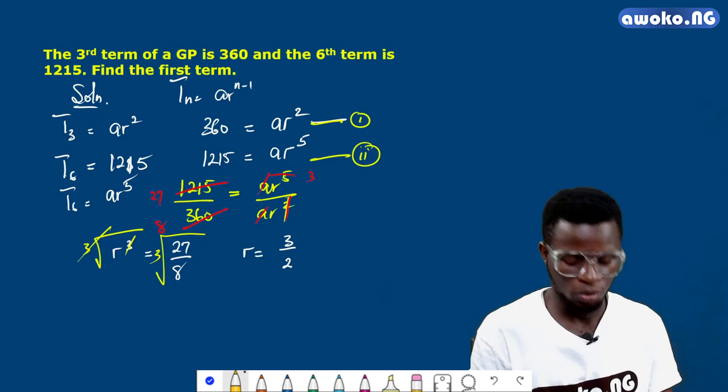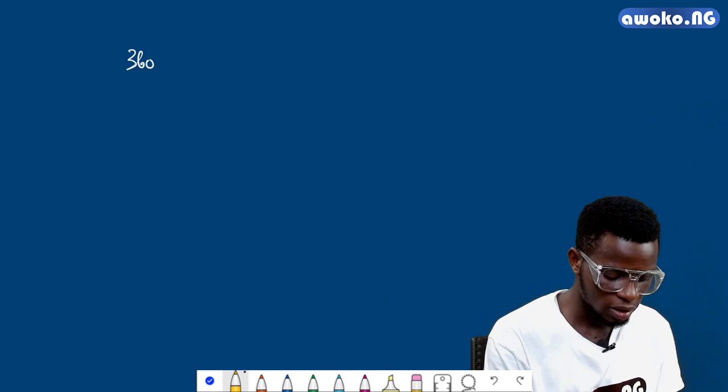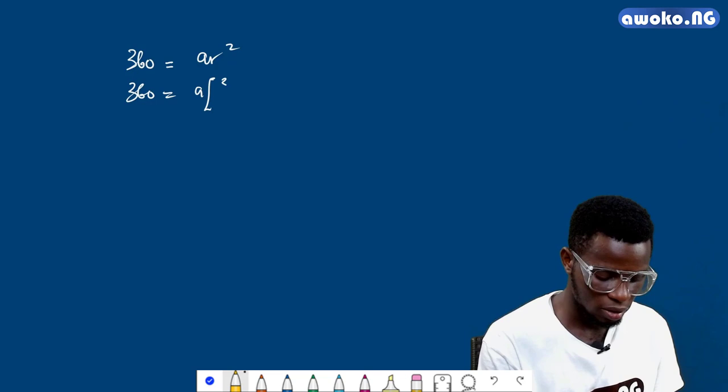Since we have the common ratio already, we can substitute this value of r into either equation 1 or equation 2, but for simplicity I will put it inside equation 1. Equation 1 still remains 360 equals ar². So 360 equals a times (3/2)², which will give me a times 9/4.